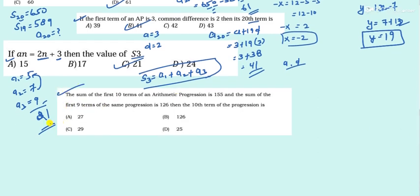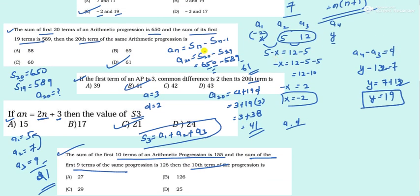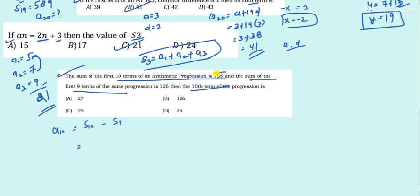Last question: The sum of the first 10 terms S_10 = 155 and the sum of the first 9 terms S_9 = 126. Find a_10. Using a_n = S_n − S_(n−1): a_10 = 155 − 126 = 29. Option C is correct. In 10 minutes you have learned all kinds of questions that could be asked from the chapter on AP.